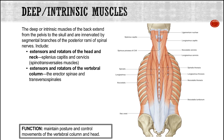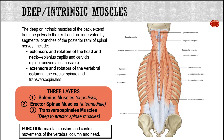Collectively, the intrinsic muscles maintain posture and control movements of the vertebral column and head through eccentric contraction. These muscles can be subdivided into three layers. Most superficially we have the splenius muscles. Strip those away and we have the erector spinae — long, column-like muscles running from the skull down into the pelvis. Even deeper are the transversospinalis muscles, running obliquely from the spinous processes to the transverse processes through the vertebral column.